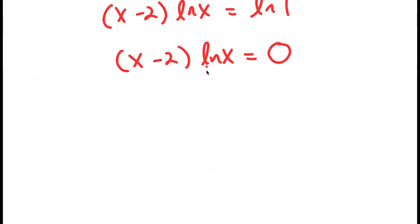And now, I have two different equations. My first equation is x minus 2 equals 0, and my second equation is ln of x equals 0.